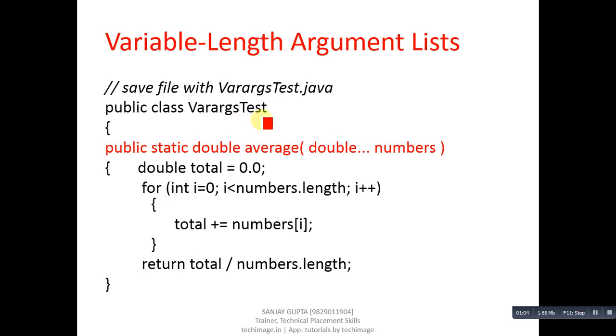I have defined a function which is average. Return type of this function is double. Now this is important to declare variable length argument: we have to put three dots with the data type.